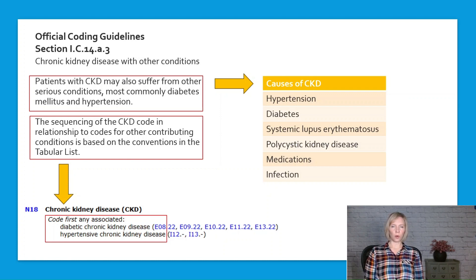The order in which the CKD code is assigned in relation to codes for other contributing conditions follows the conventions outlined in the tabular list. So when coding chronic kidney disease, be sure to pay close attention to those instructional notes.